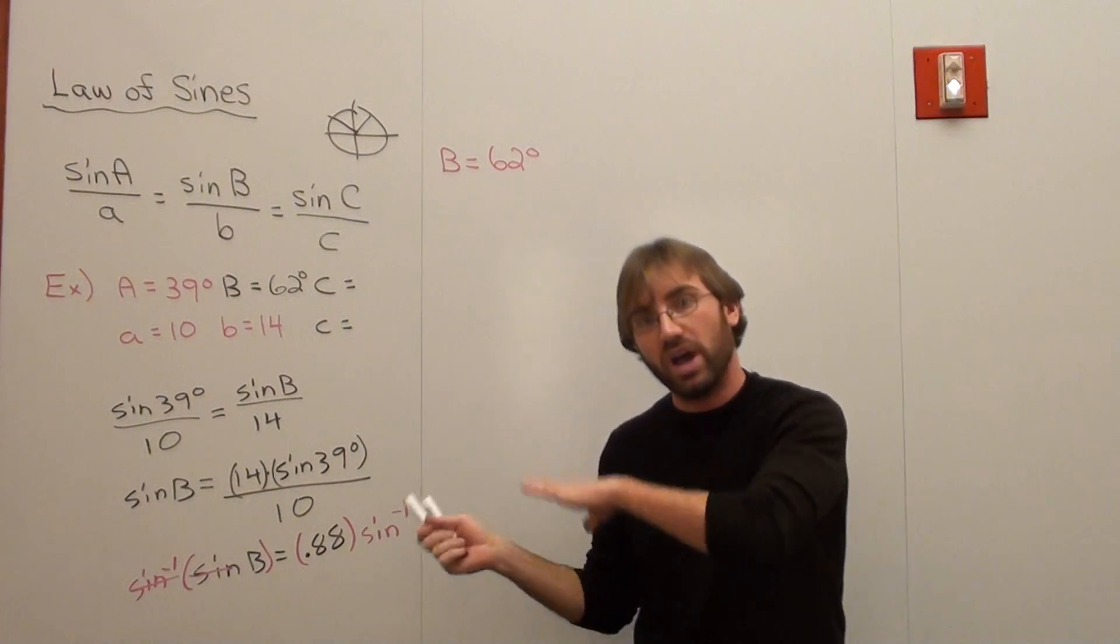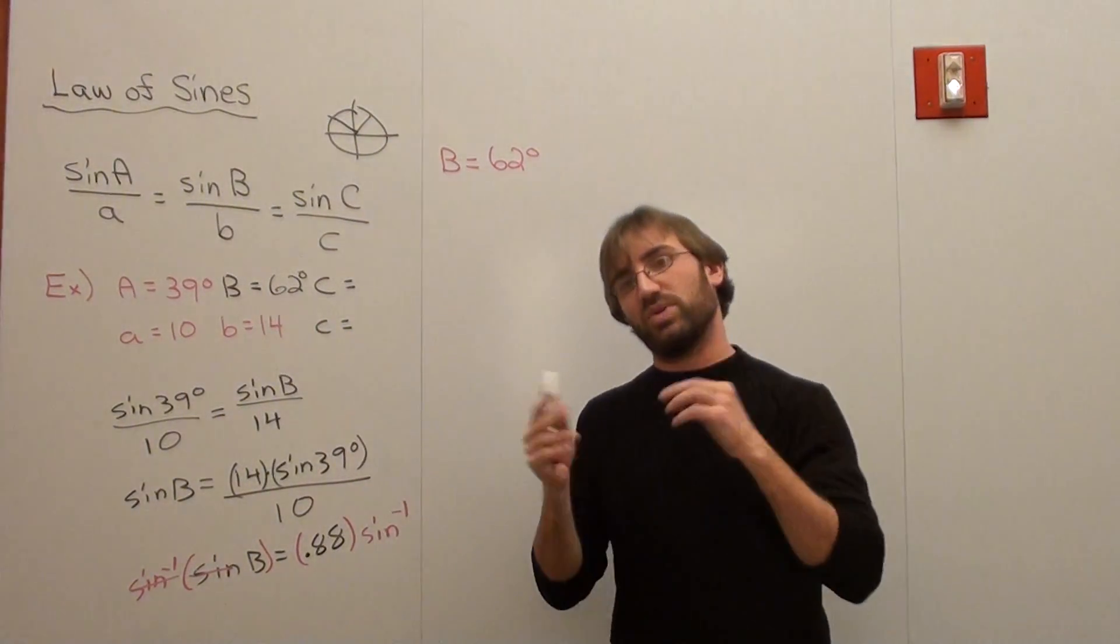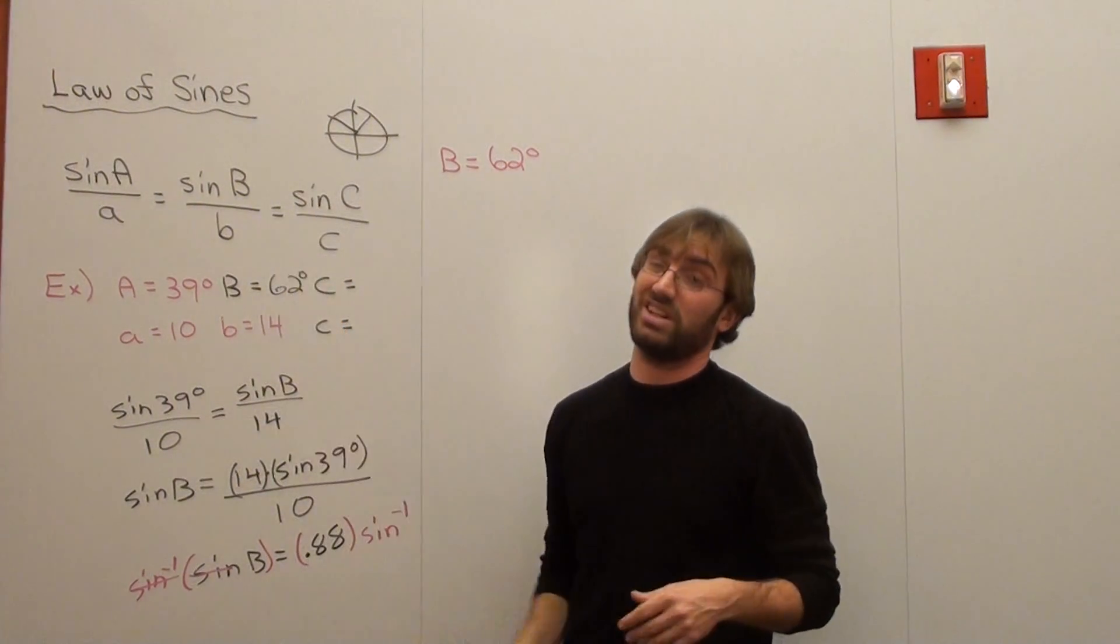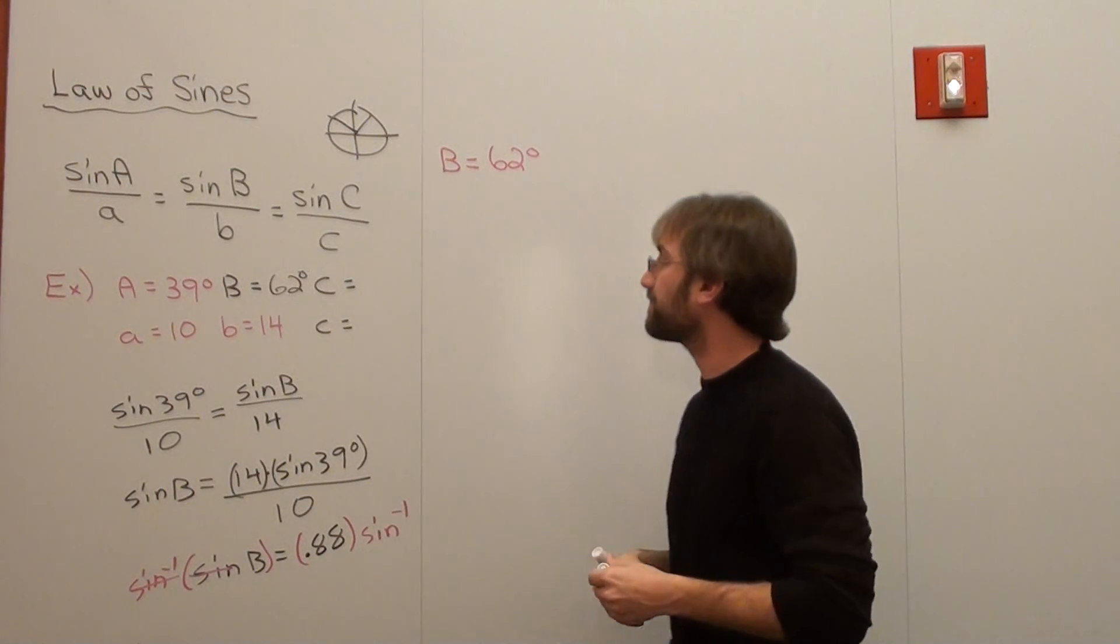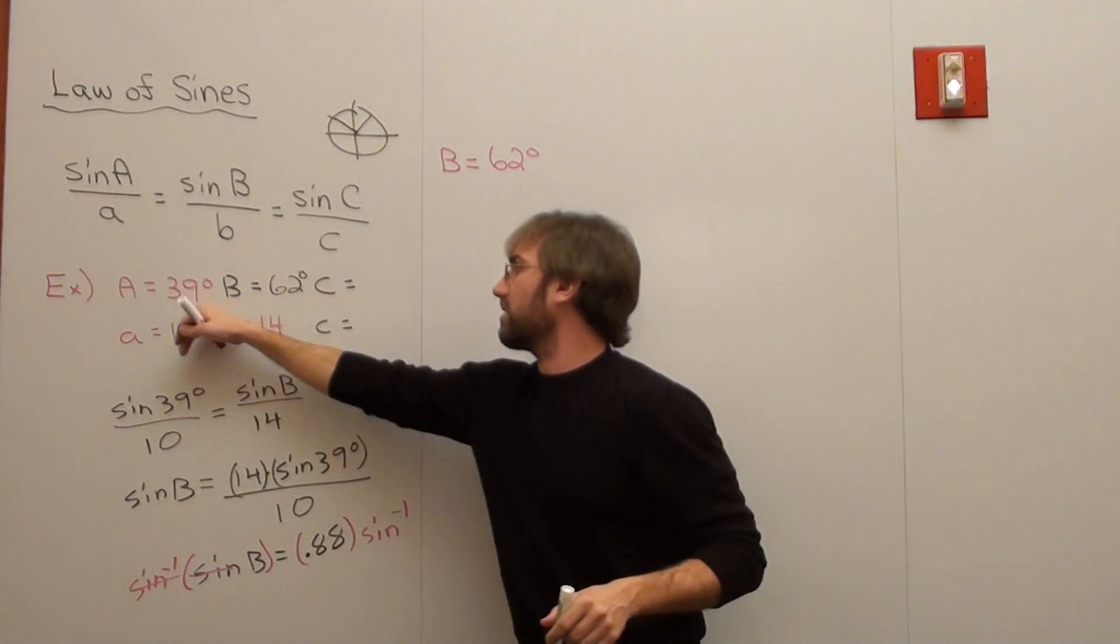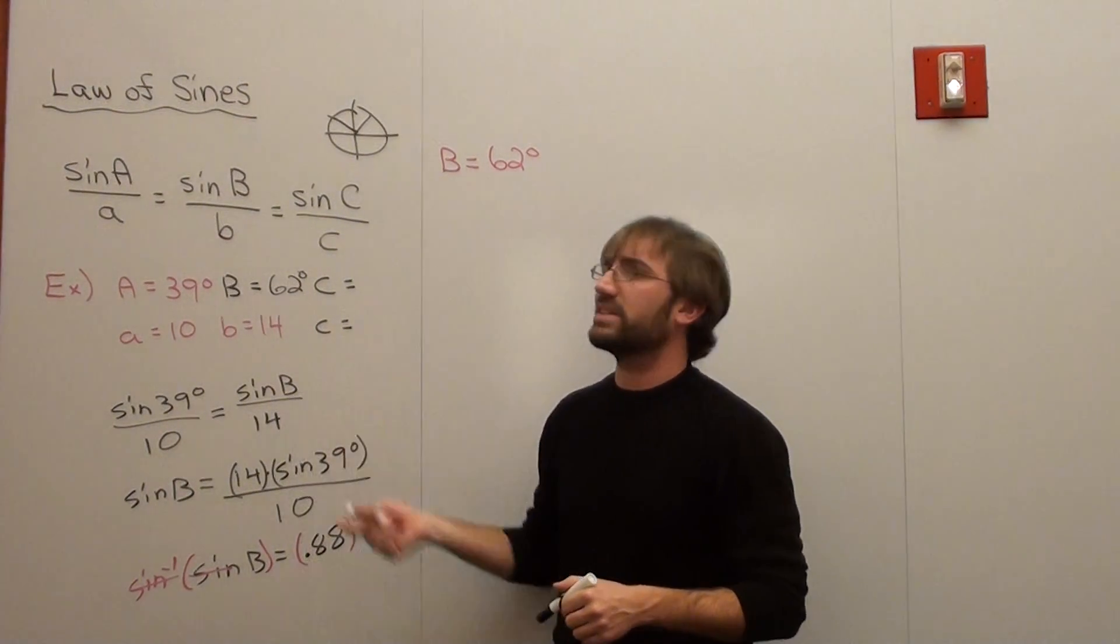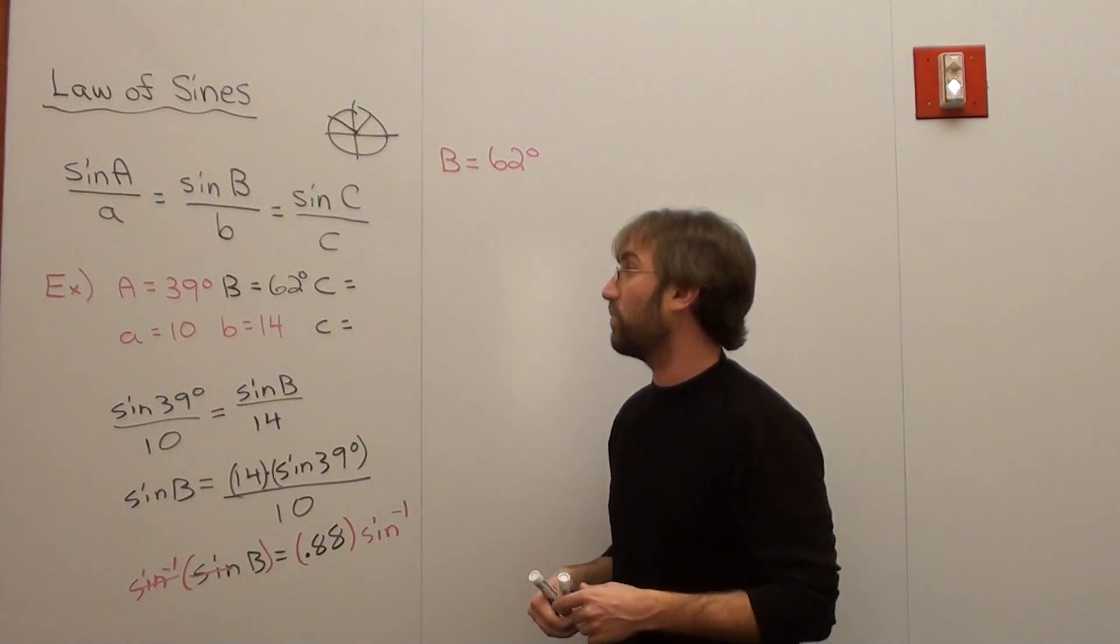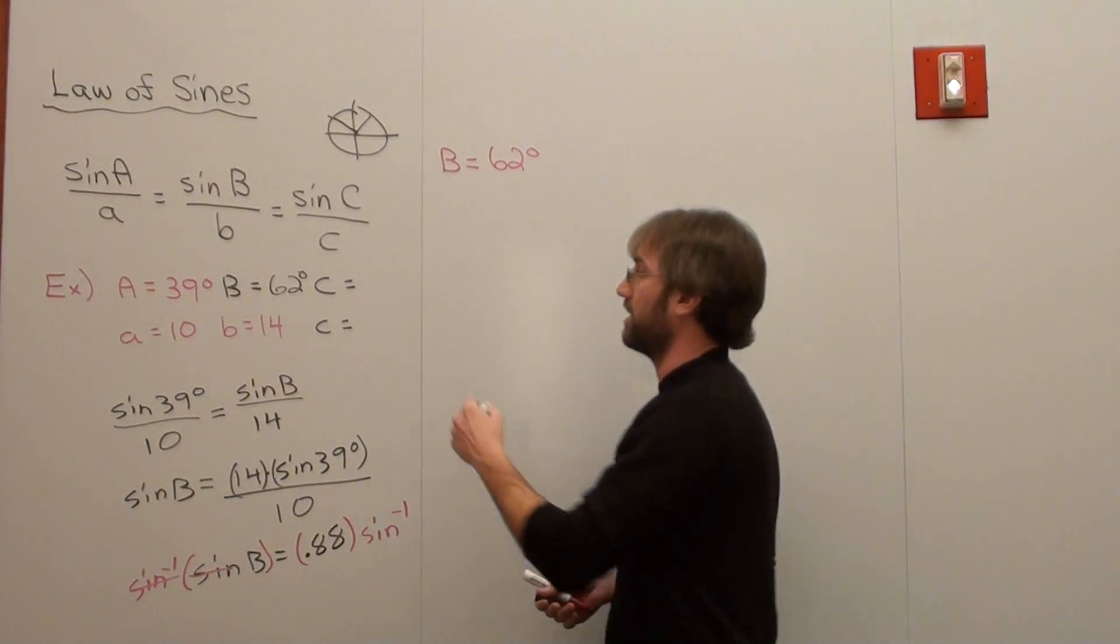It's not only just 62 degrees. But we're going to go ahead and finish this problem up. Something for you to keep in mind. But this is not only 62 degrees. It's actually 118 degrees as a possible solution. We're not going to assume that. So this is 39 degrees and this is 62 degrees. And that adds up to 101 degrees, which means C is 79 degrees.